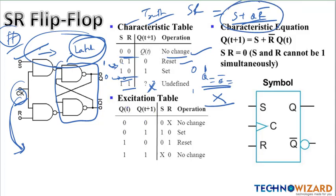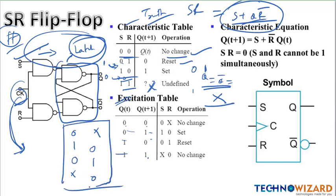Many students have asked how to remember the SR excitation table. First draw Q: 0, 0, 1, 1 and Q(next): 0, 1, 0, 1. Then write S as: 0, 1, 0, X — and R as: X, 0, 1, 0. So the pattern is: S = 0, 1, 0, X and R = X, 0, 1, 0. This is how you can remember the excitation table for the SR flip-flop.